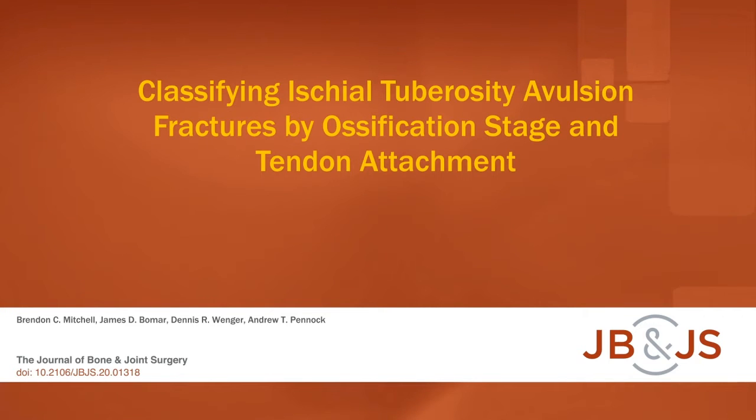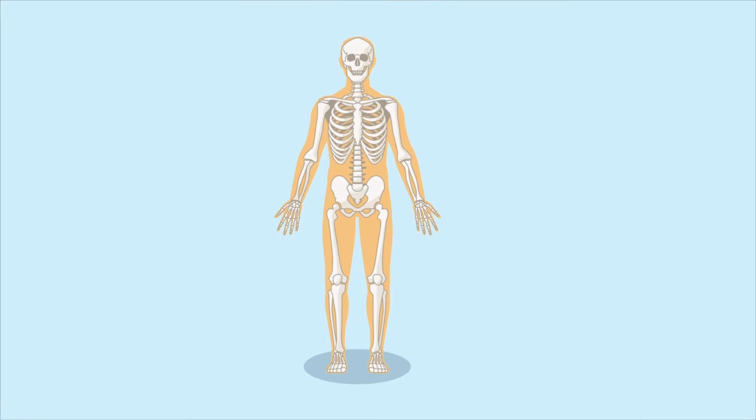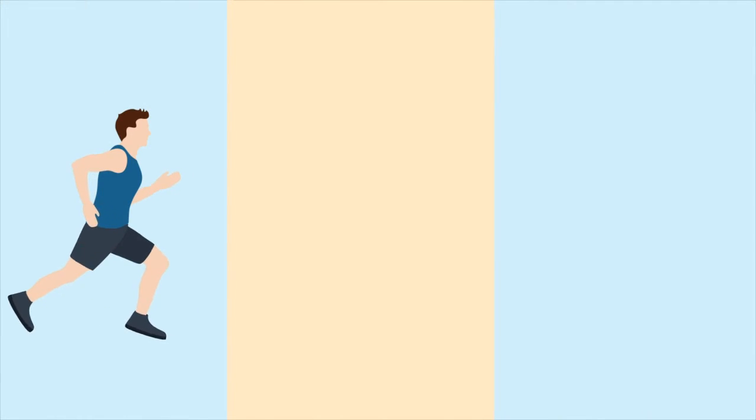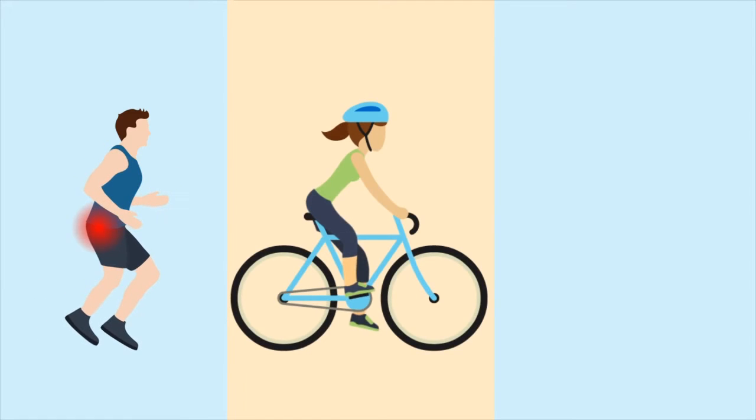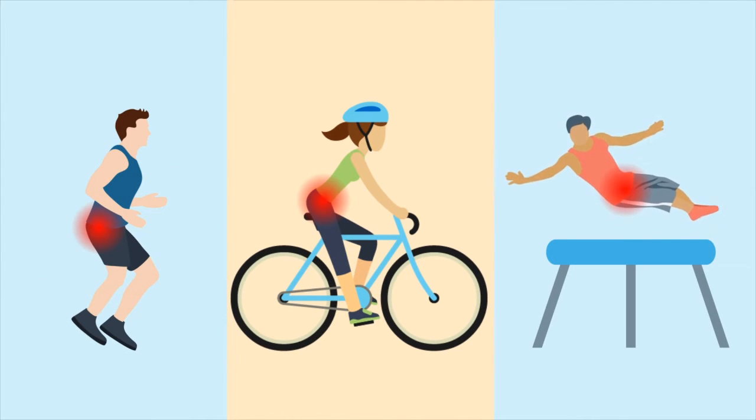This is an audio-visual representation of a study published in the Journal of Bone and Joint Surgery in 2021. Apophysial avulsion fractures of the pelvis are rare injuries that are mostly found in teenage athletes and typically happen because of a sudden, forceful, or unbalanced contraction of the musculotendinous unit.